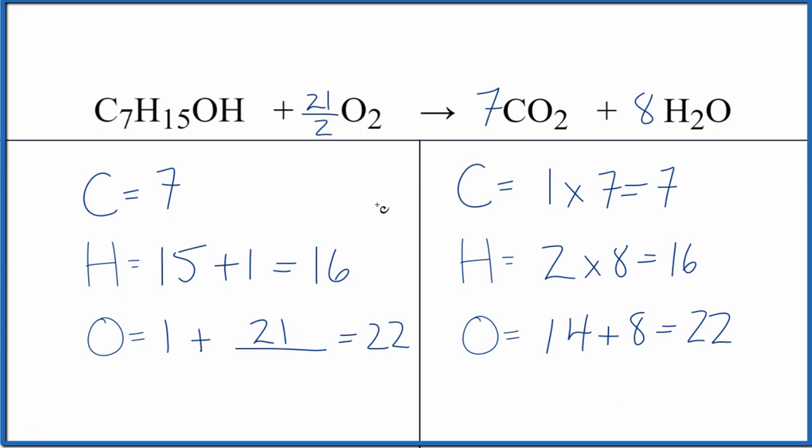So this is the balanced equation for C7H15OH plus O2. We have one, 21 over two, seven, and eight as our coefficients.